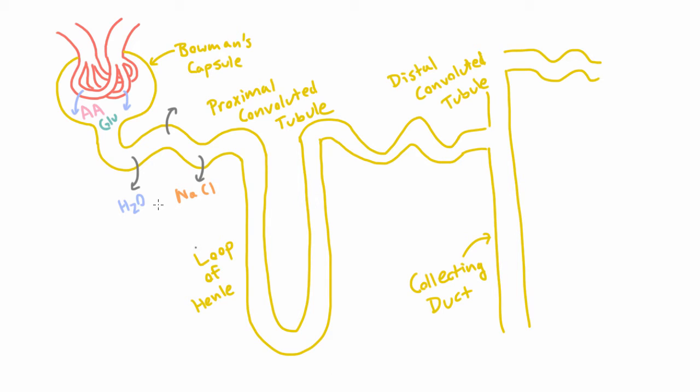Now a question you might have is: we're talking about reabsorbing these things and showing them hopping out of the nephron, but once they hop out, where do they go? Do they just float off and hang out in the kidney tissues? The answer is, of course, they don't. We want to get them back out to the rest of the body, not just keep them in the kidney.